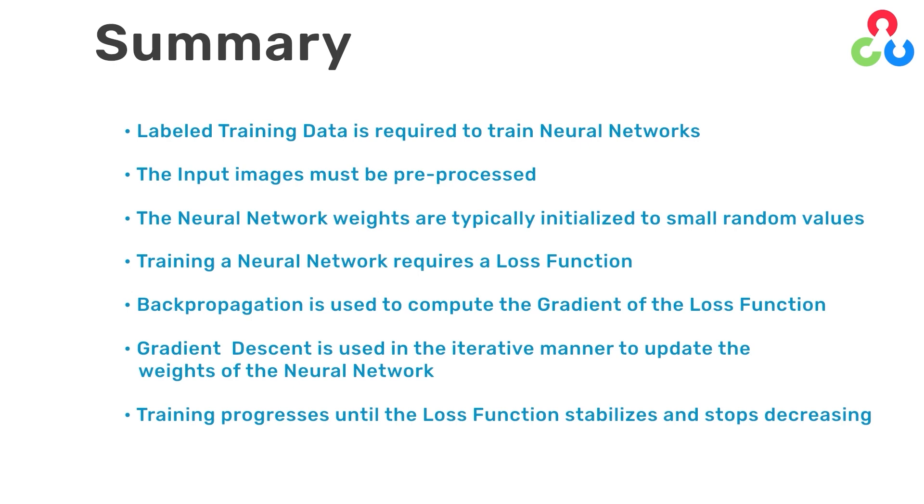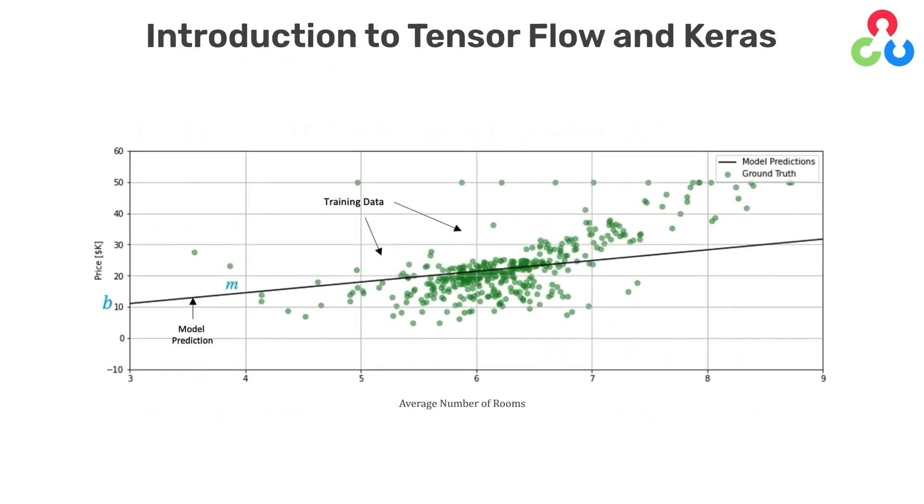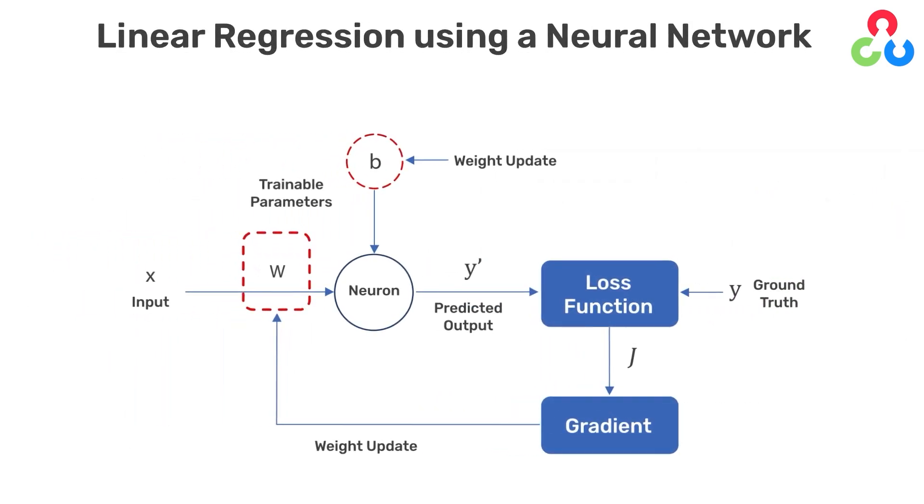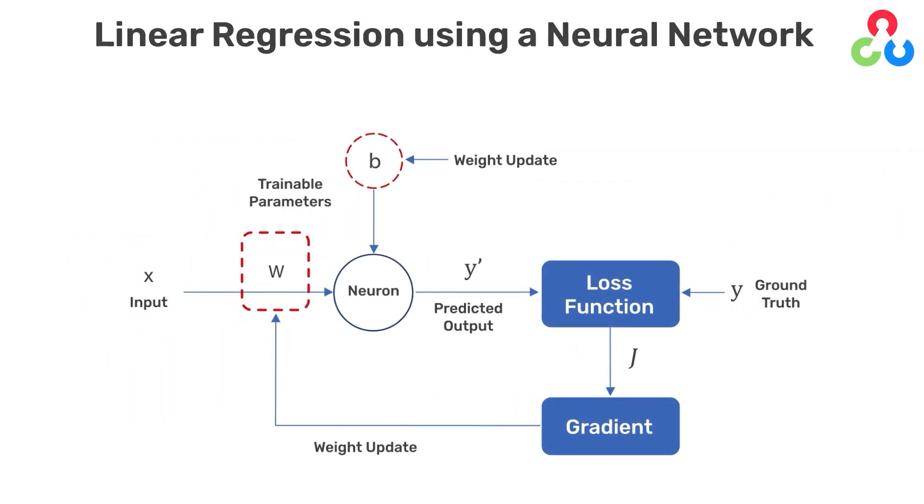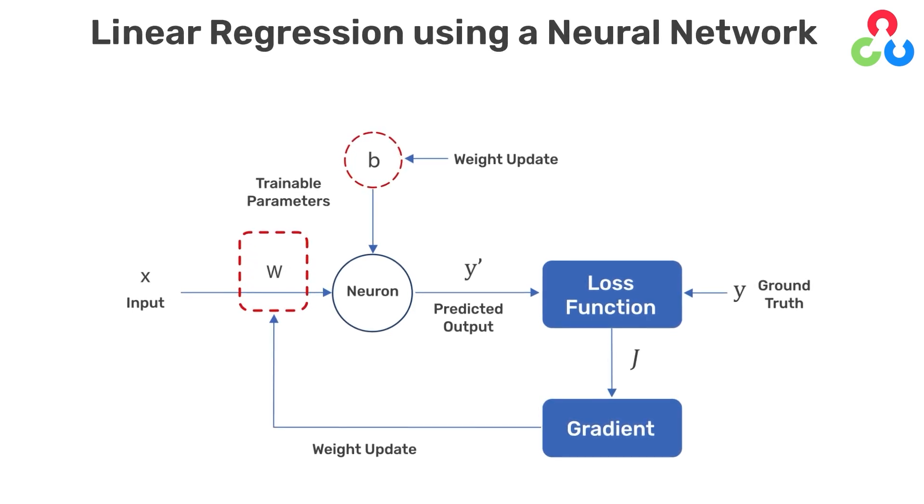So that concludes the introduction for how to train a simple neural network for image classification. And in the next video, we're going to dive into a coding example and show you how you can use TensorFlow and Keras to solve a linear regression problem using a neural network. We hope you found this video helpful. Thanks so much, and we'll see you next time.